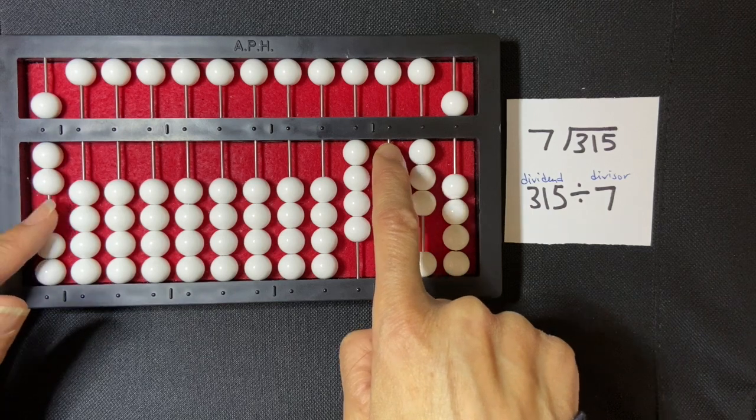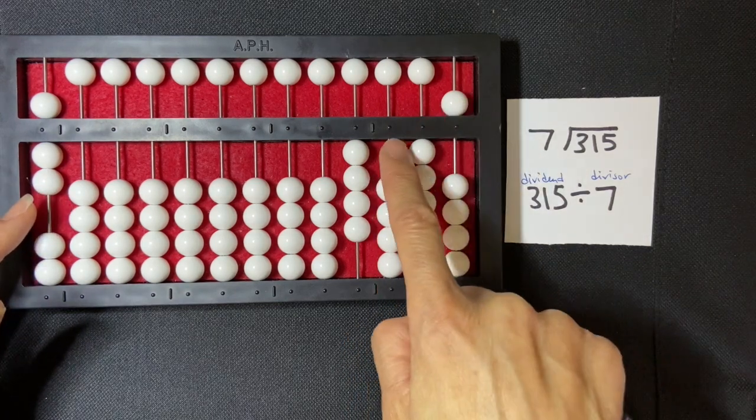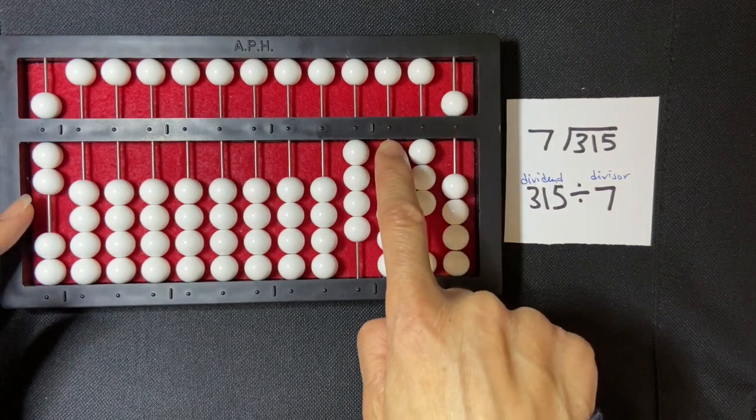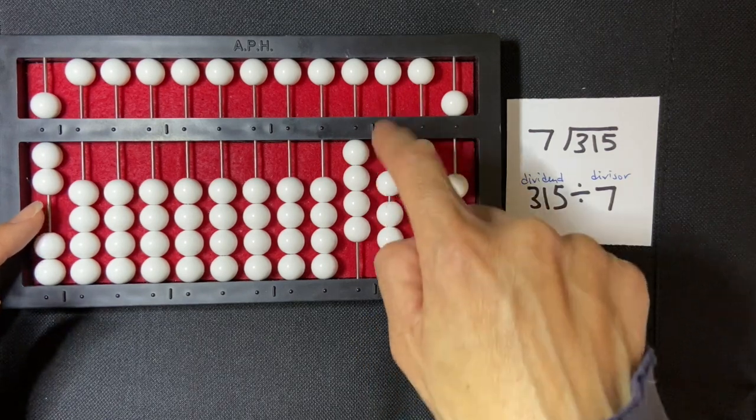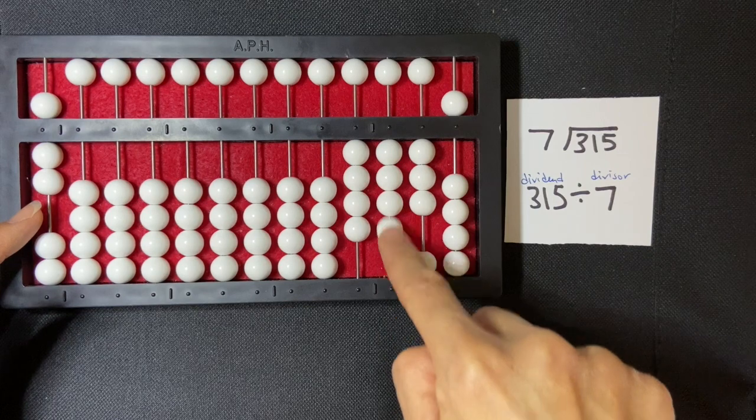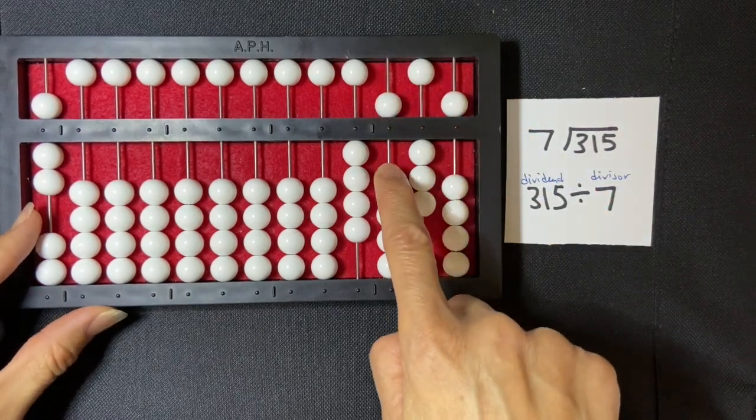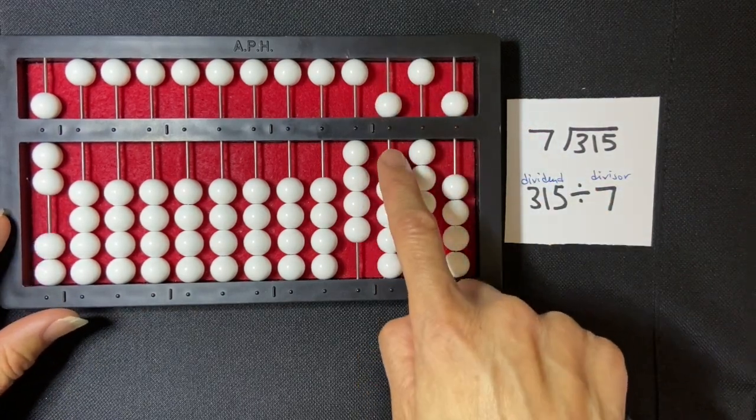And so now I'm going to say, how many times is seven going into 35? Well, seven goes into 35 five times, so I'm going to set my five: one, two, three, four, five.